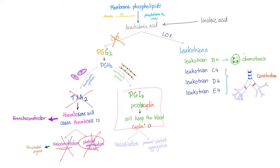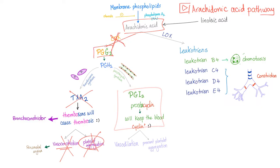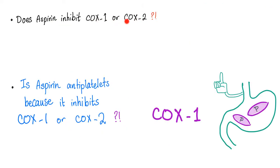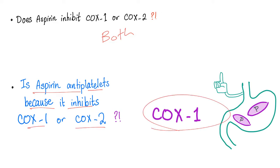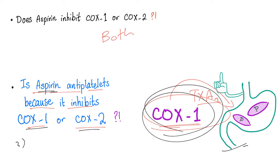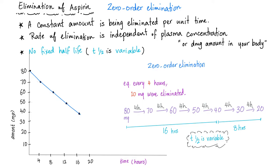How about prostacyclin? Watch my previous video — I've discussed prostacyclin and the aspirin effect on it. Why is aspirin bad for asthmatics? Because if arachidonic acid is not going to be converted into prostaglandin G2, thanks to the cyclooxygenase inhibition, all of the arachidonic acid will be converted into leukotrienes, which make the life of asthma patients hell. Is aspirin antiplatelet because it inhibits COX-1 or COX-2? COX-1, because only COX-1 leads to thromboxane A2. Is aspirin bad for your stomach because of COX-1 or COX-2? COX-1. Aspirin is eliminated by zero-order elimination.